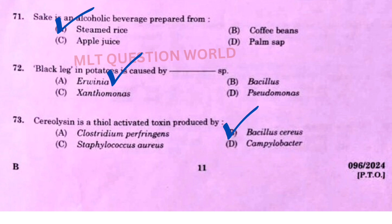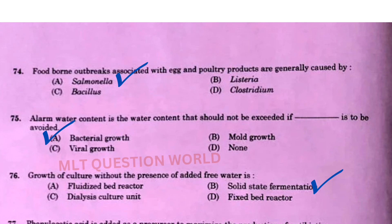Next question: Cereolysin is a thiol-activated toxin produced by — the right answer is Bacillus cereus. Next one: Foodborne outbreaks associated with egg and poultry products are generally caused by — the right answer is option A, Salmonella. Next one: Alarm water content is the water content that should not be exceeded if dash is to be avoided — the right answer is option A, bacterial growth.